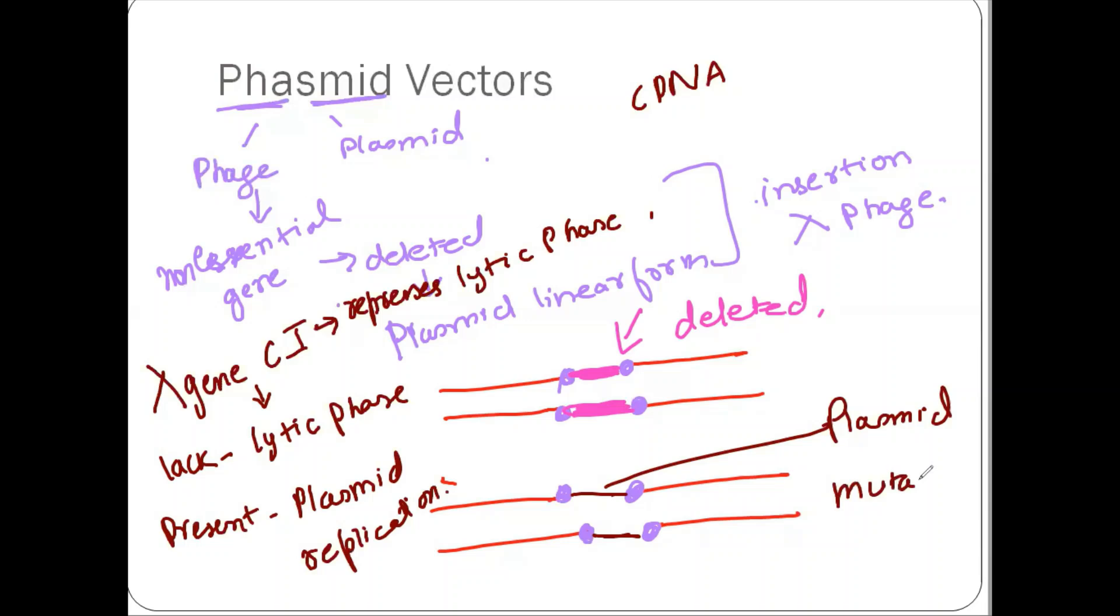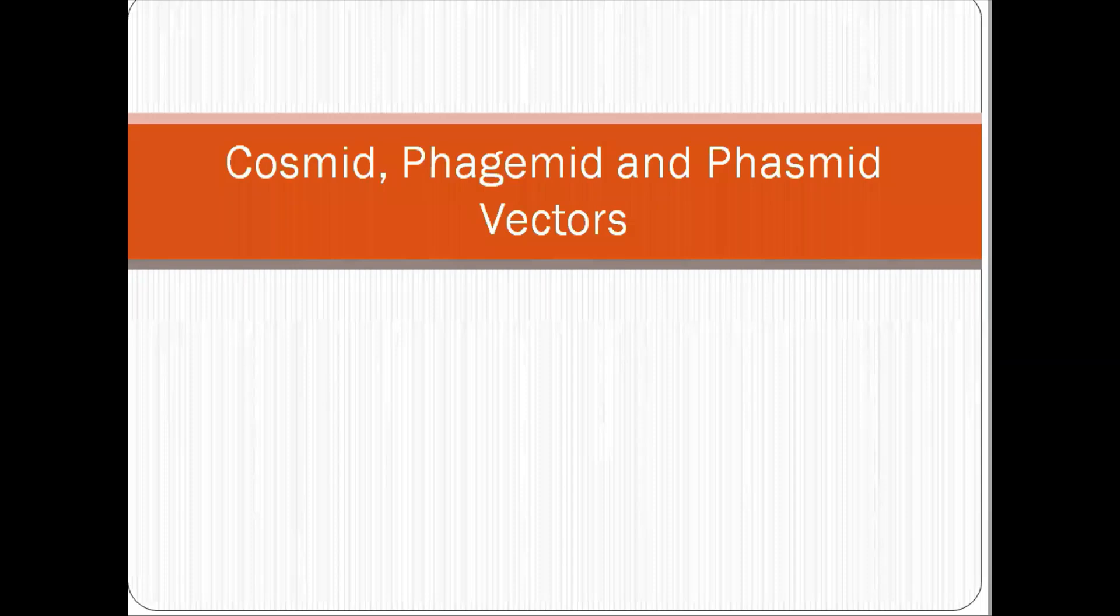Now, again, if it is a mutant, mutant means it's not working now, and it became temperature sensitive. So low temperature, you have your CI gene intact. So that means CI gene is there, it is repressing the lytic phase. So you have plasmid replication. If this temperature is high, means CI gene is not working now, it is lytic replication or lytic phase. So this was all about phasmid vectors.